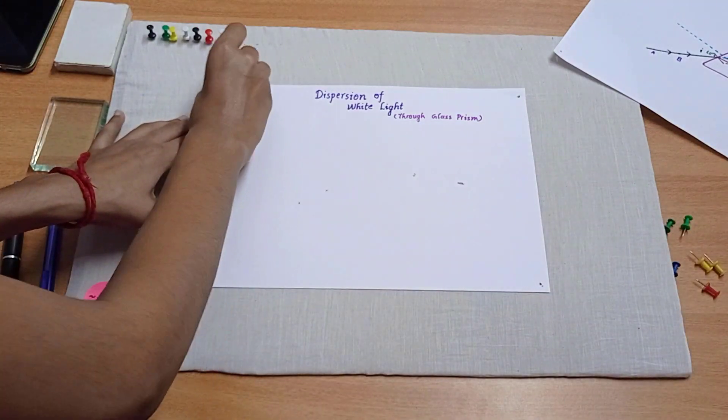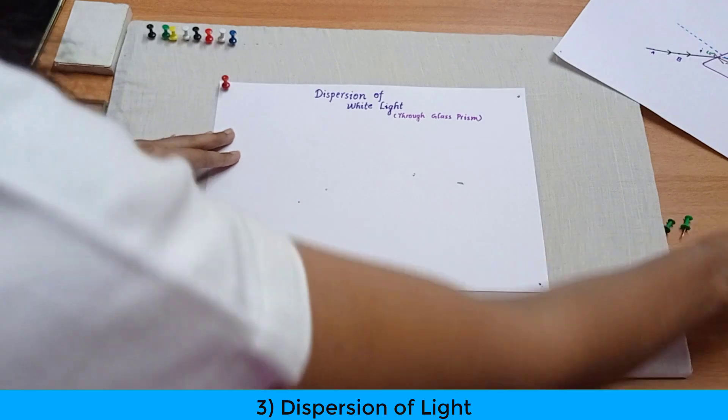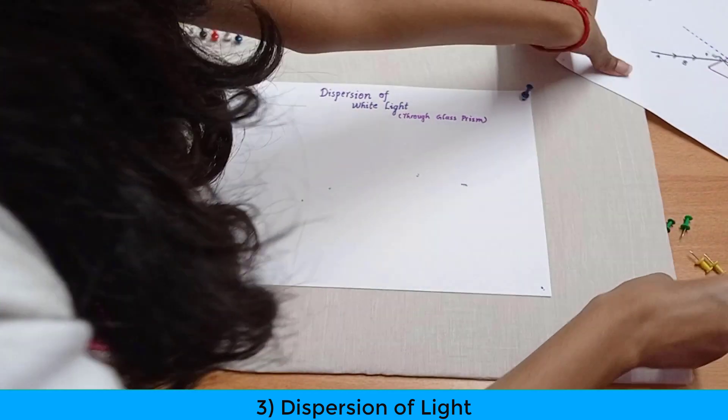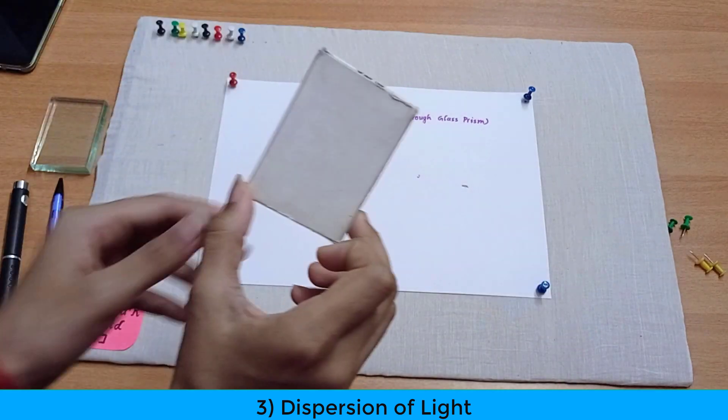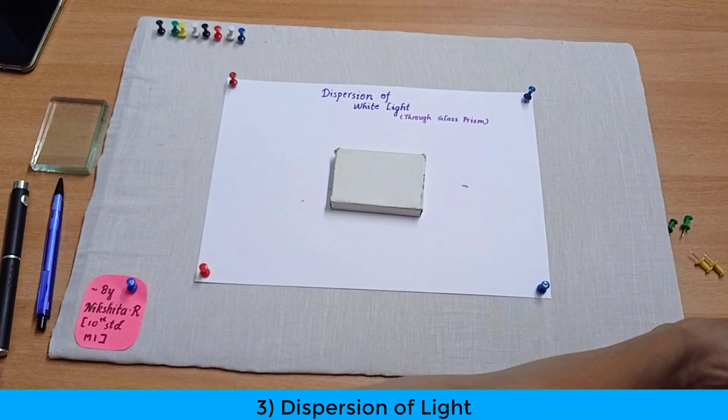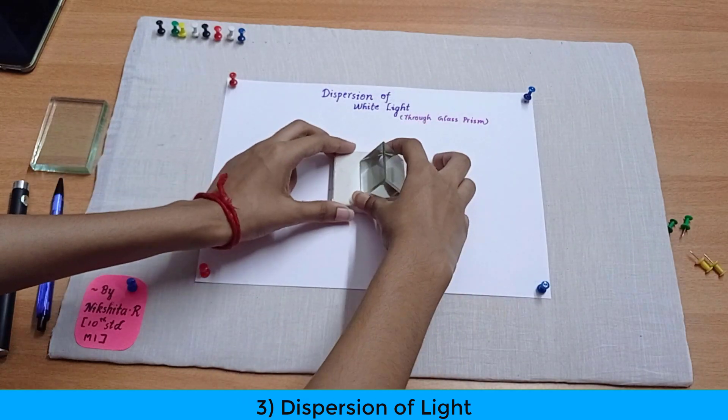Now let's move on to the last and the most interesting activity which is dispersion of white light into seven colors. Now what I'll do is I'll just place a cardboard box like this over here for a support and I'll take a triangular glass prism over here and place it over here.